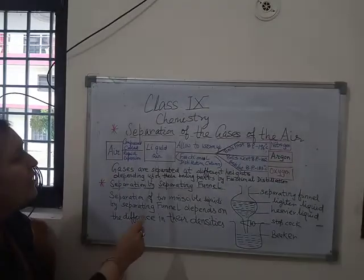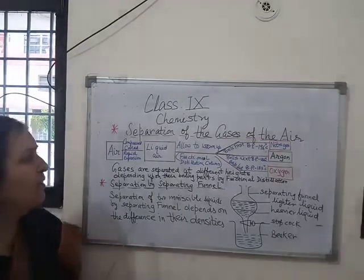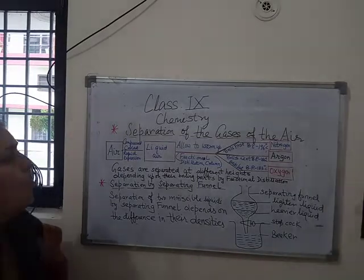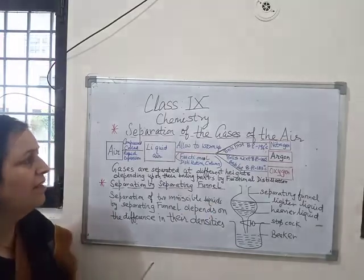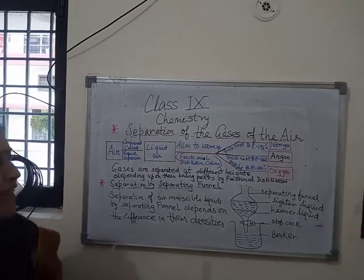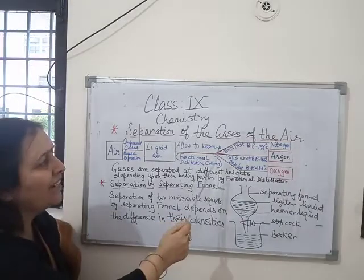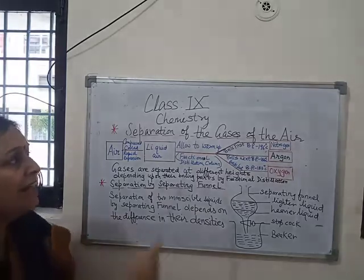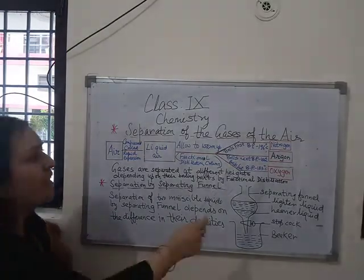Now the liquid air is allowed to warm up in the fractional distillation column. On warming, liquid nitrogen — having a low boiling point of minus 196 degrees Celsius — boils first. It collects at the top of the fractional distillation column and converts into nitrogen gas.